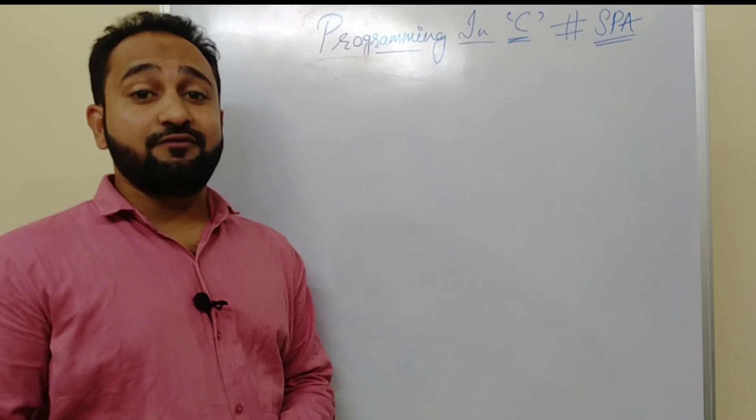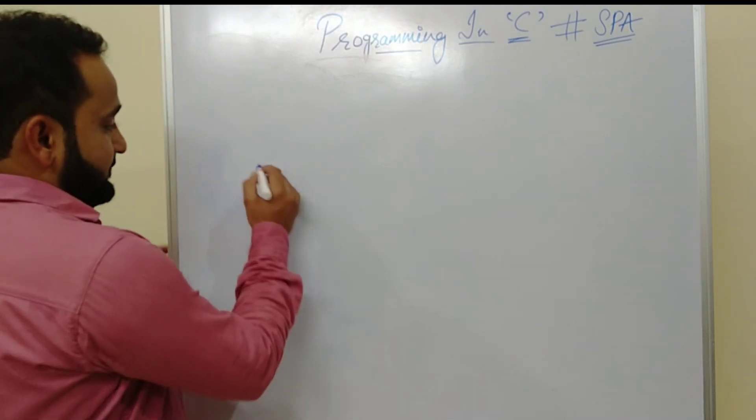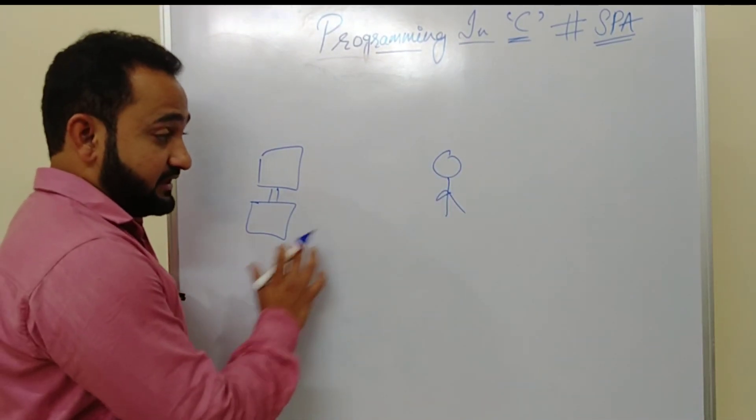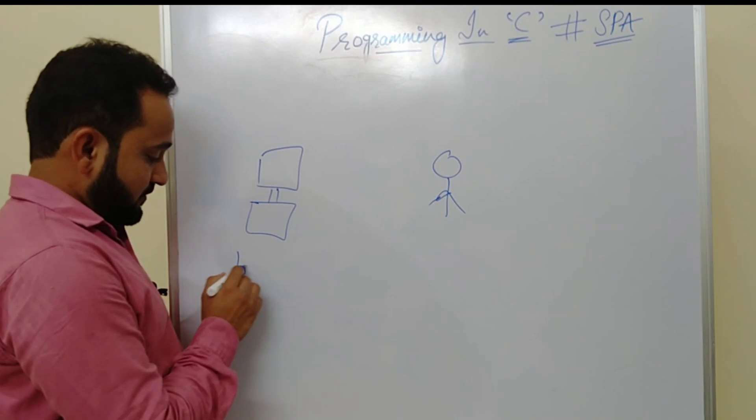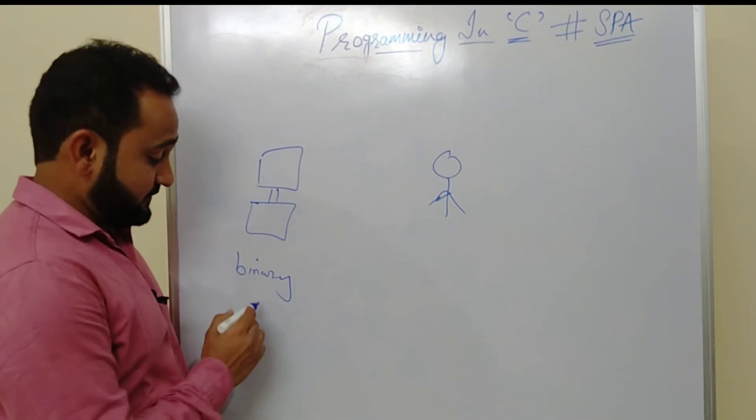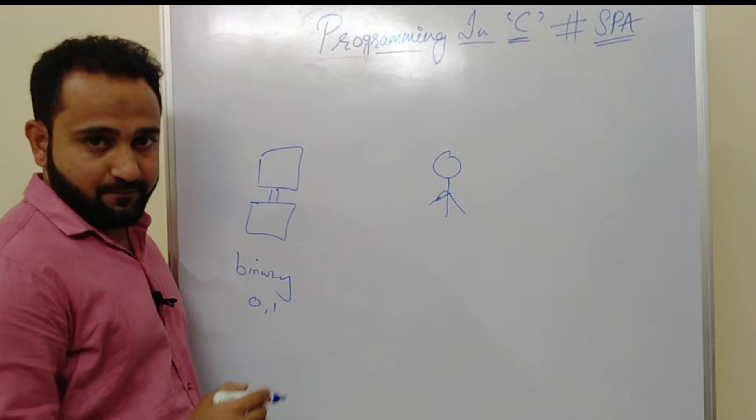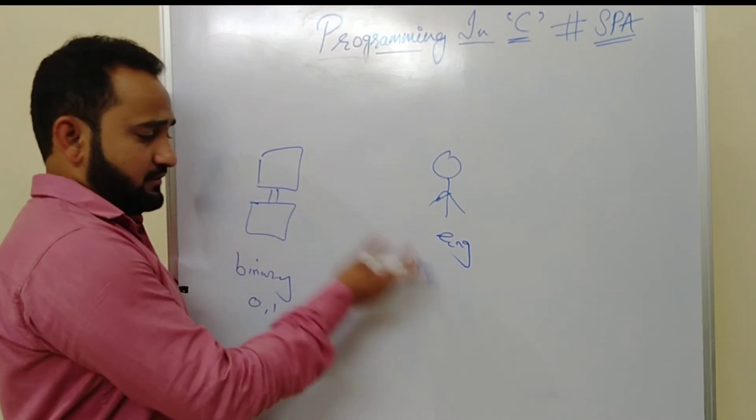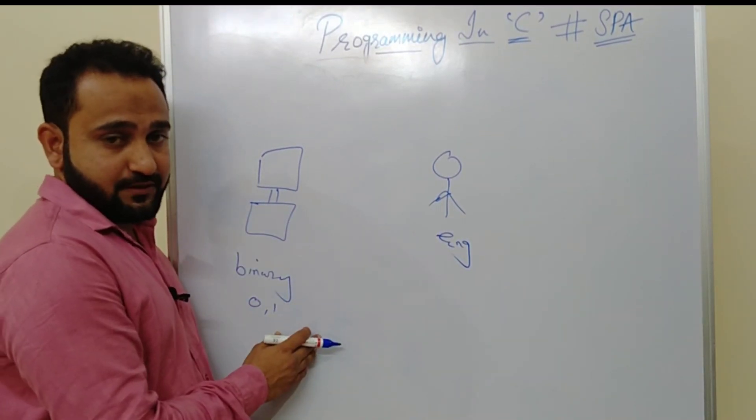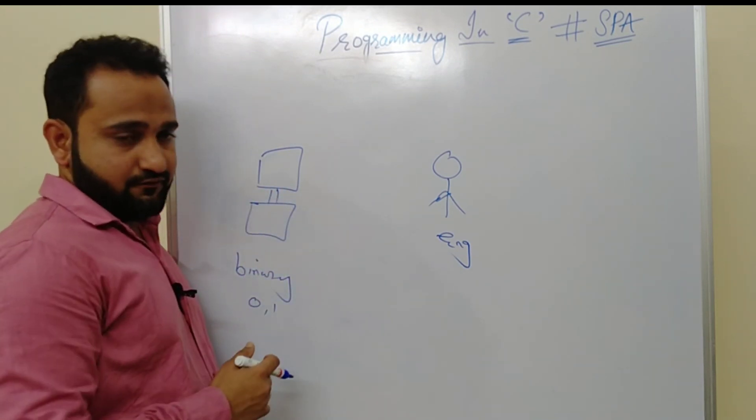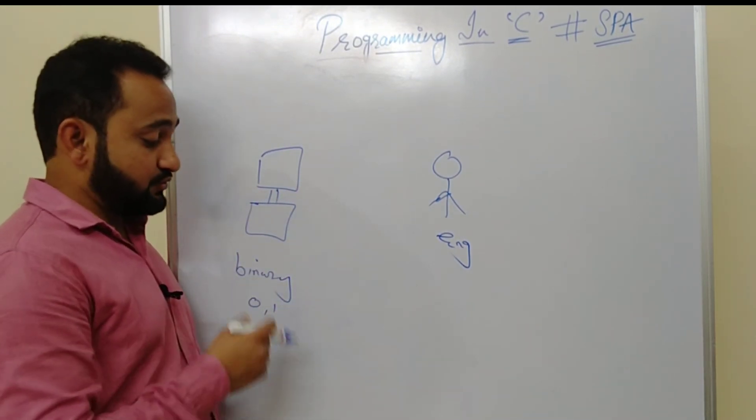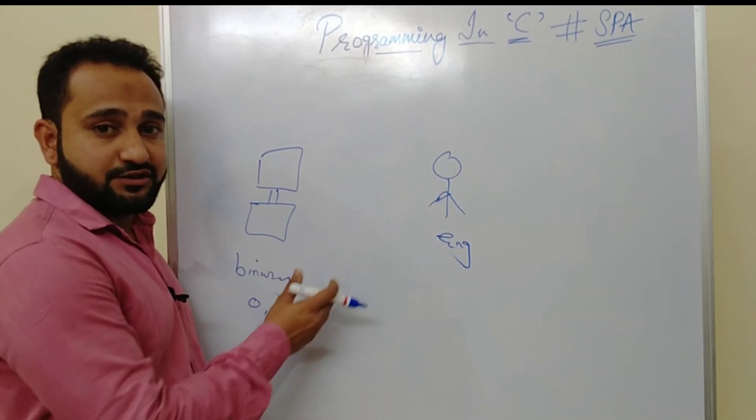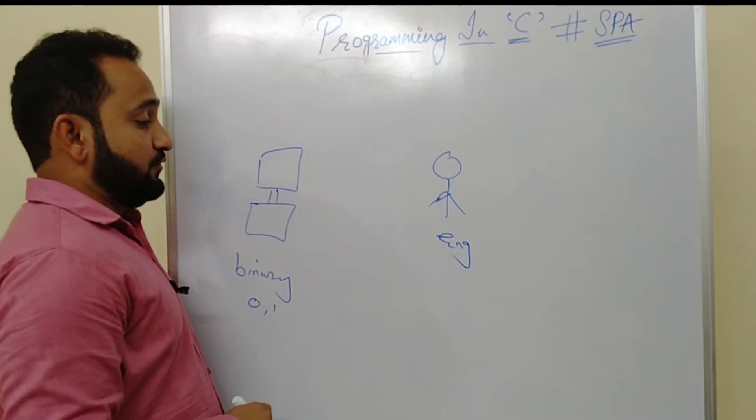First of all, let's see why we require programming. If you see, we have a computer and we are sitting here and we want to communicate with the computer. So if you know, your computer only understands one thing, that is binary language. It only understands zero one, and we understand, for example, we understand English language. So it's not feasible, right, to communicate with your computer in binary language.